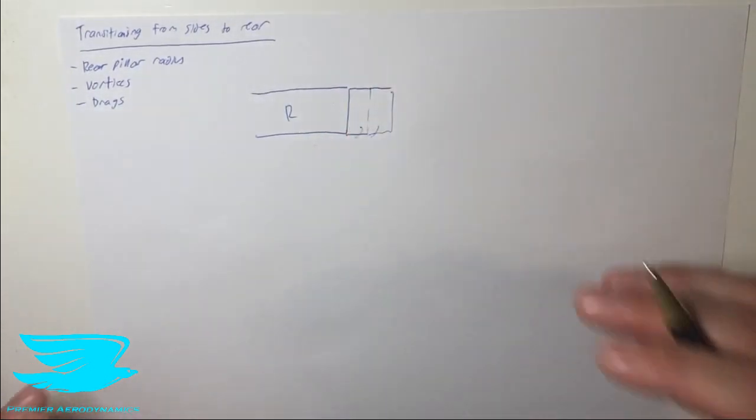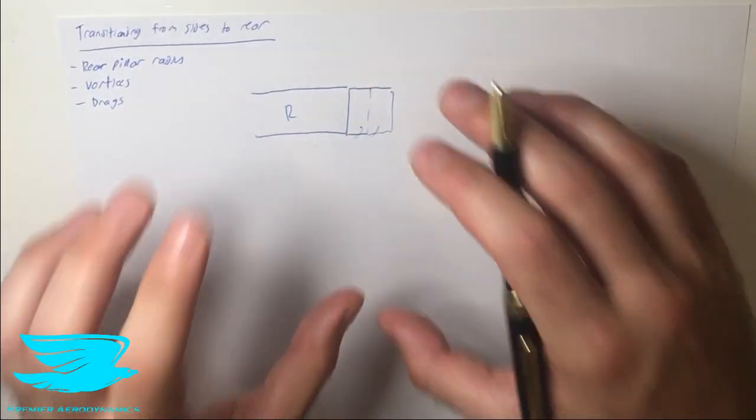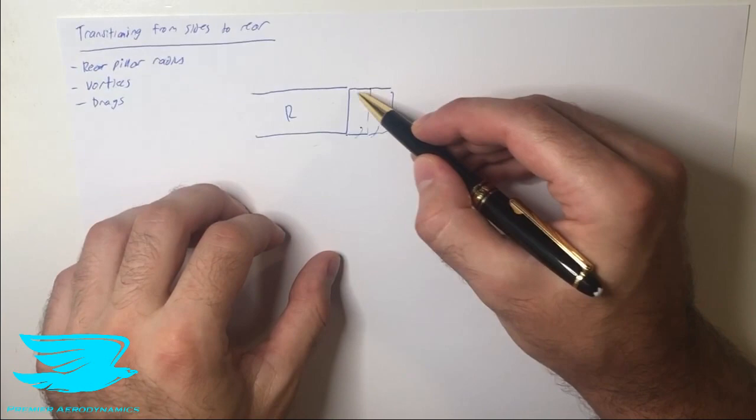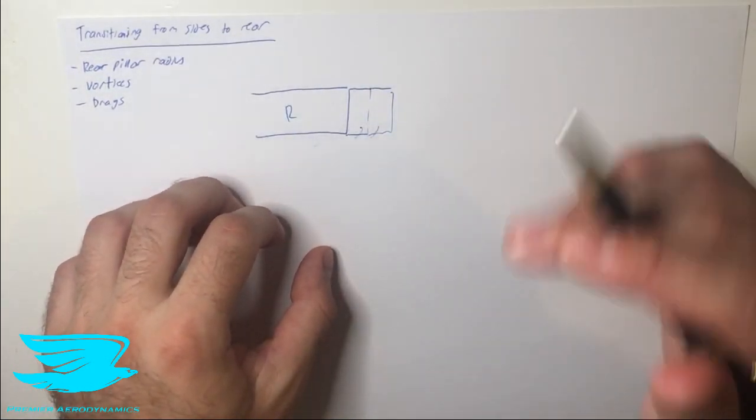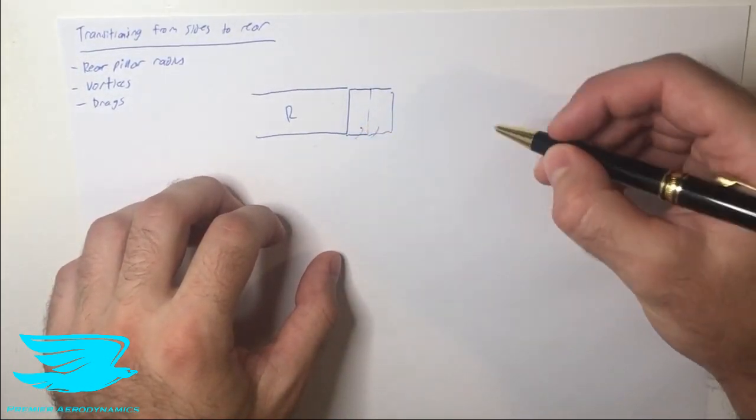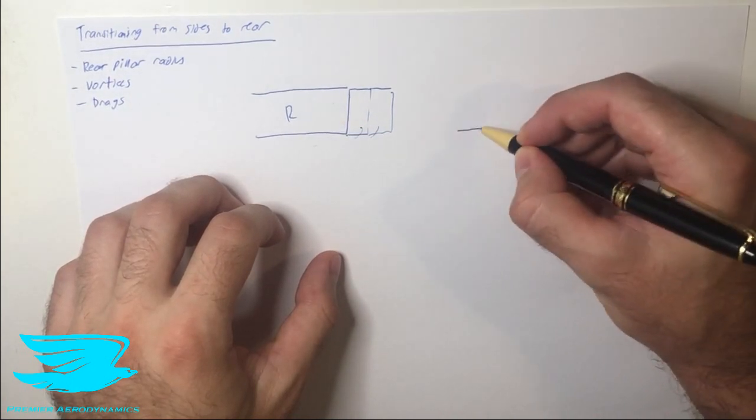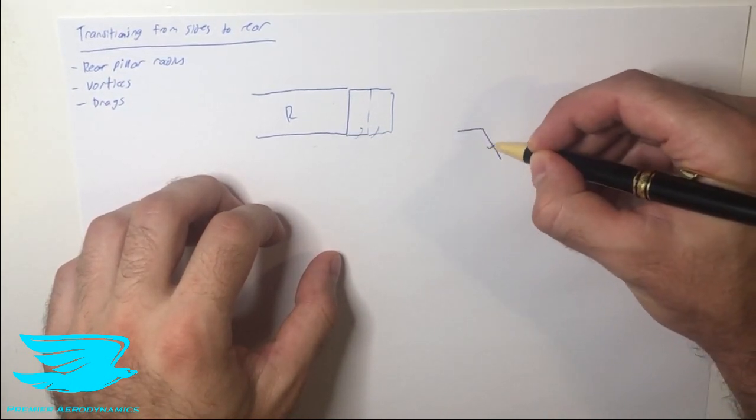But is that necessarily a good thing here? Well, the answer is that the drag does significantly depend on the radius of these corners, but not in the way that you would think. In fact, if you were to round these corners more, so for example let's say you have the rear of the car and you round this corner a lot, the drag will actually increase a lot.